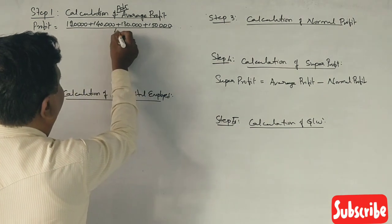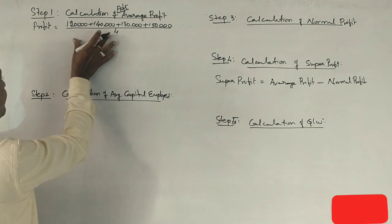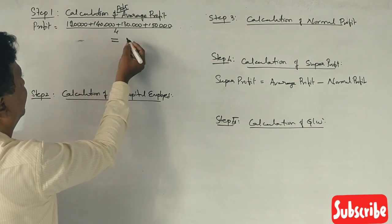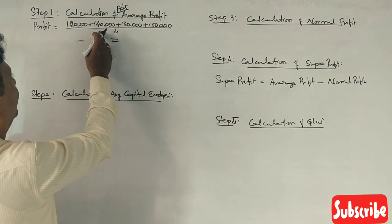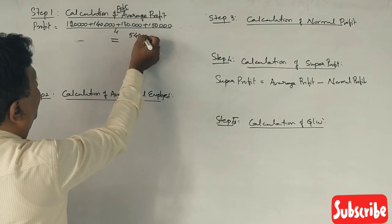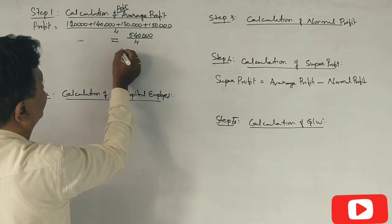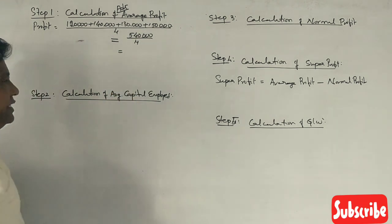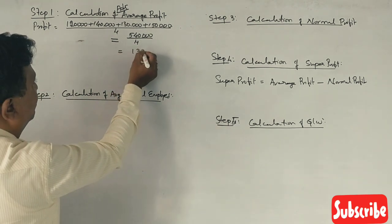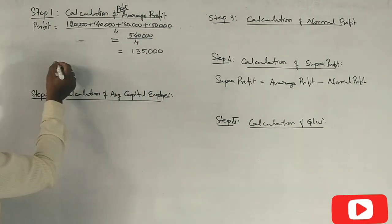Divided by four. Total: one twenty plus two sixty equals five forty. Five forty divided by four gives one lakh thirty-five thousand. This is the average profit.